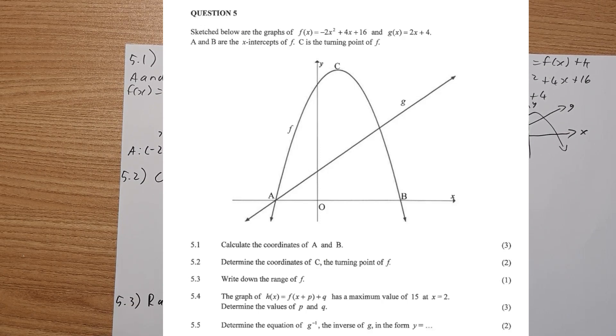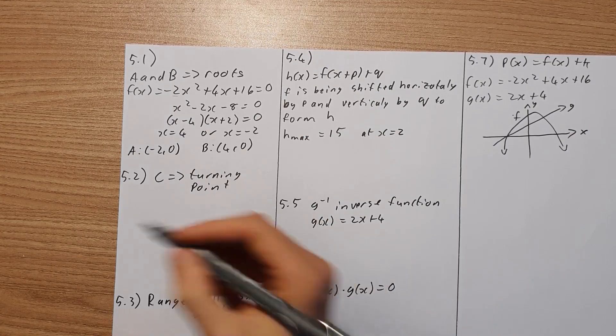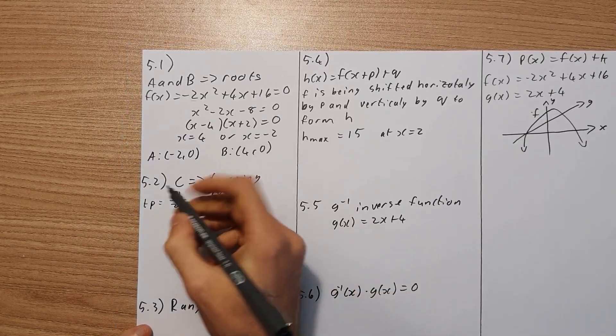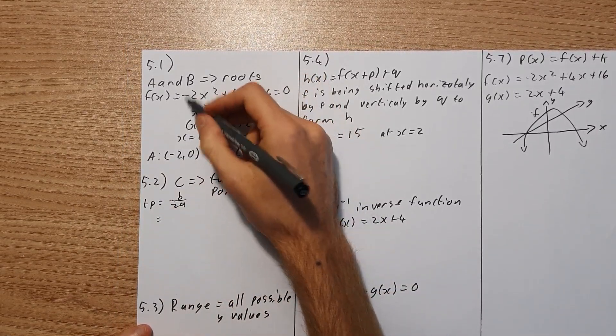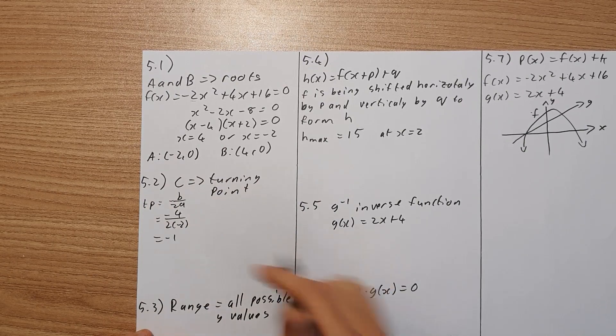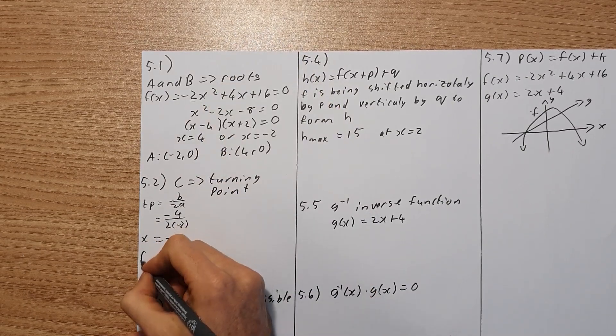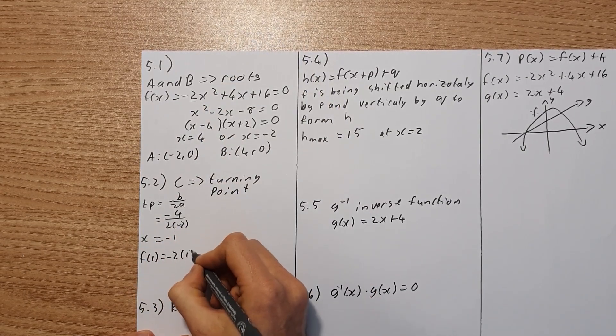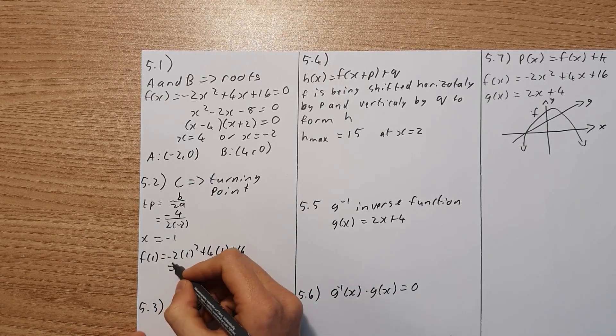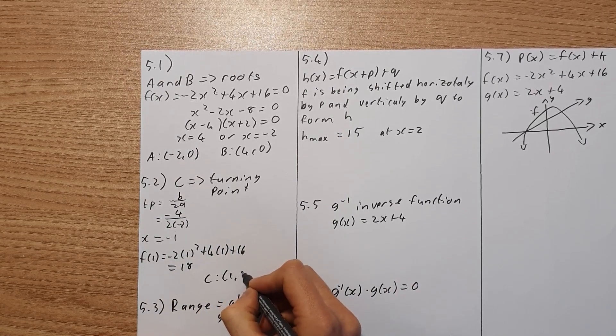Now let's have a look at 5.2. It says determine the coordinates of C, the turning point. So there are two main ways of doing this. We can use the formula. So turning point equals negative B over 2A. So we can see that the B value is 4 and A is negative 2. So it's negative 4 over 2 times negative 2, which equals negative 1. This gives you your x value for your turning point. Now we substitute that into the equation. So we're looking for f of 1, which equals negative 2, 1 squared, plus 4 times 1, plus 16, which then should give you a turning point of 18. So your coordinates for C is then 1 and 18.